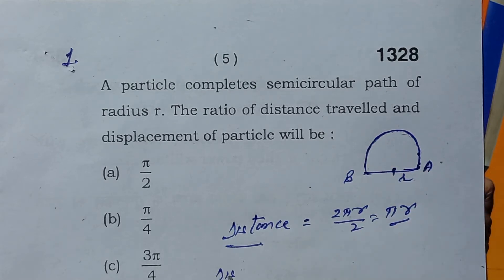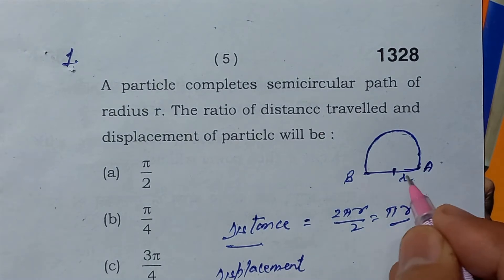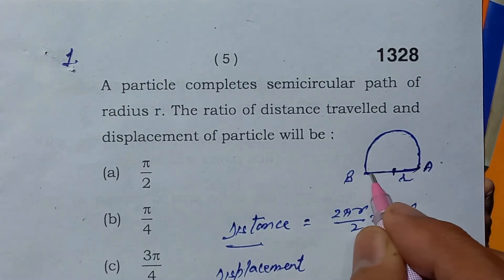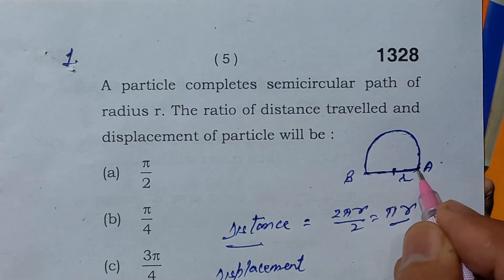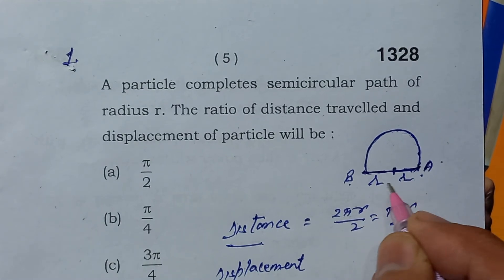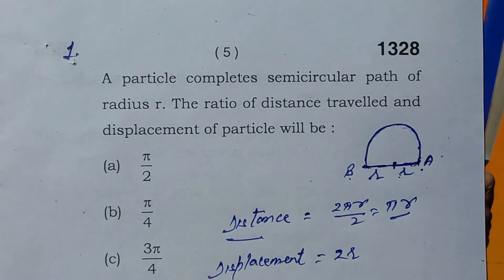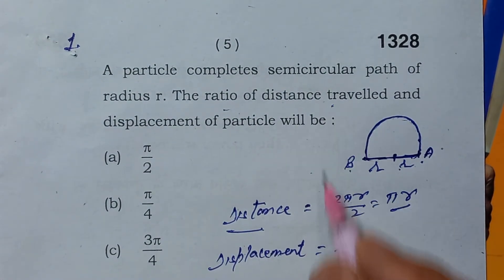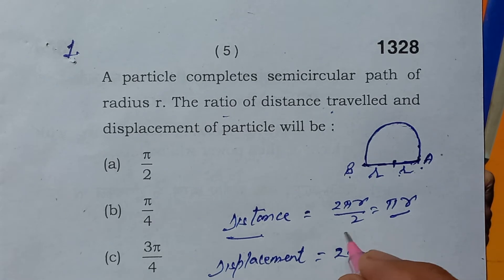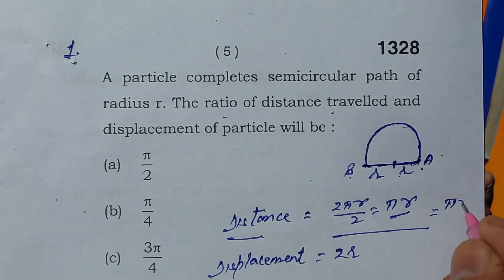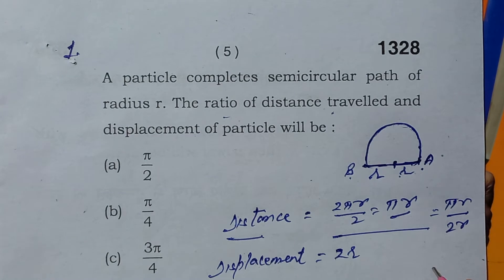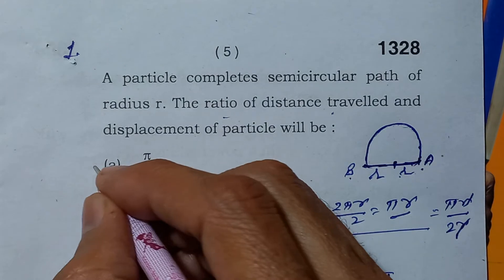And displacement, it is the shortest distance between initial and final point A and B, that will be r plus r, it will be 2r. And we have to determine the ratio of distance traveled by displacement, that is pi r by 2r. It will be pi by 2. The right answer will be A.